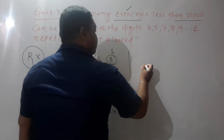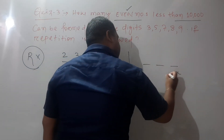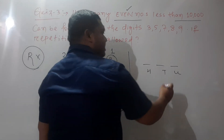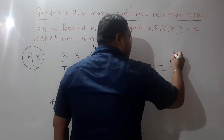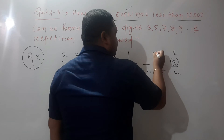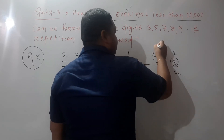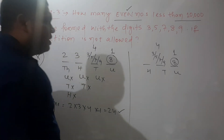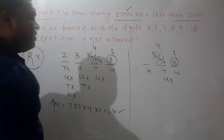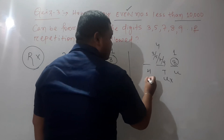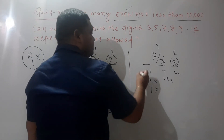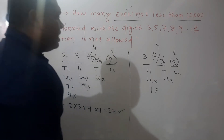Case 2: three-digit even numbers. You need unit, tens, and hundreds place values. To fill the unit place, only 8 is available — one way. To fill the tens place, the available digits are 3, 5, 7, and 9 — four possible ways. Repetition is not allowed, so the unit place value cannot be reused. To fill the hundreds place, you cannot use the unit or tens place values, leaving three possible ways.